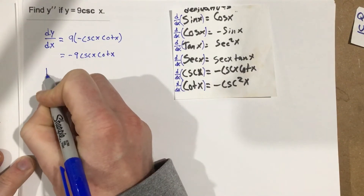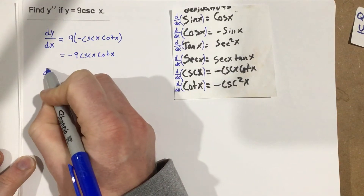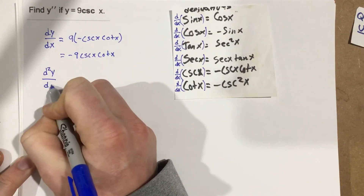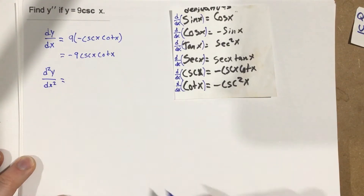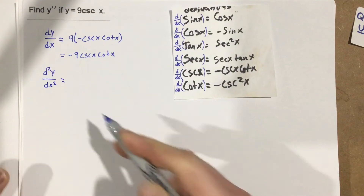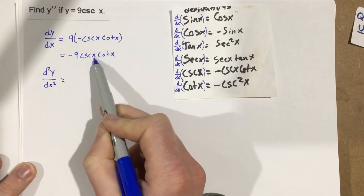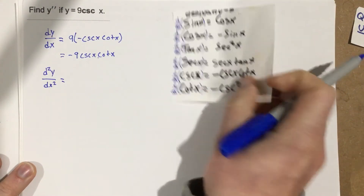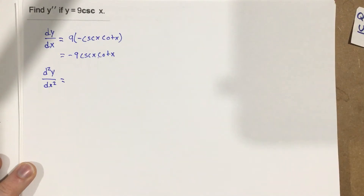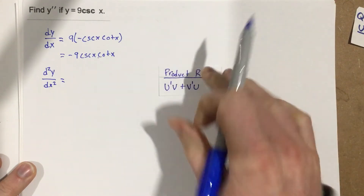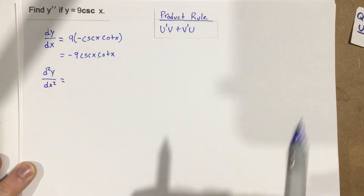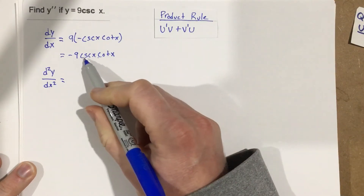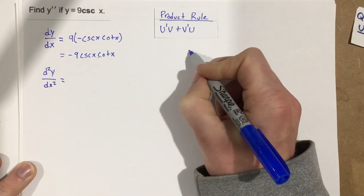Now we want to find the second derivative, so we're going to say d squared y over dx squared. We have a product, so we need to use the product rule. To use the product rule, we're going to say that negative 9 cosecant x is going to be u.